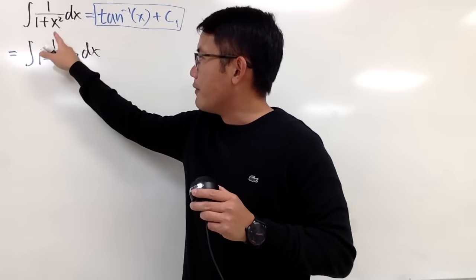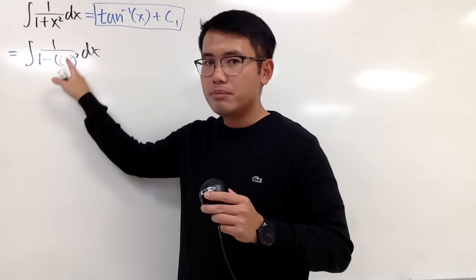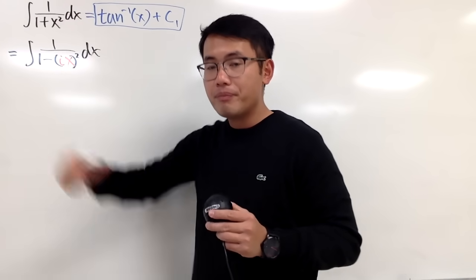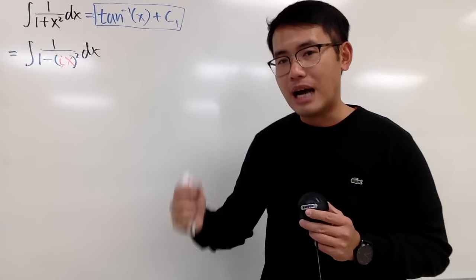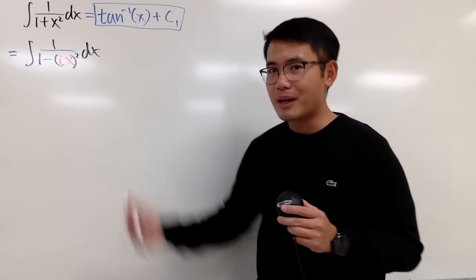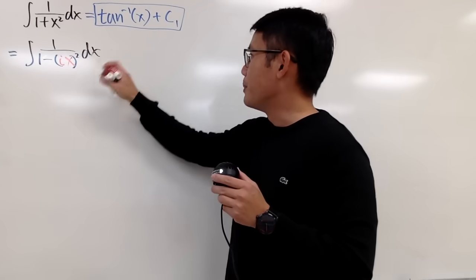And if you look at the integral of 1 over 1 minus u squared du, that's going to be the inverse hyperbolic tangent. So from here, I can just do some u sub and then I'll be able to finish this.